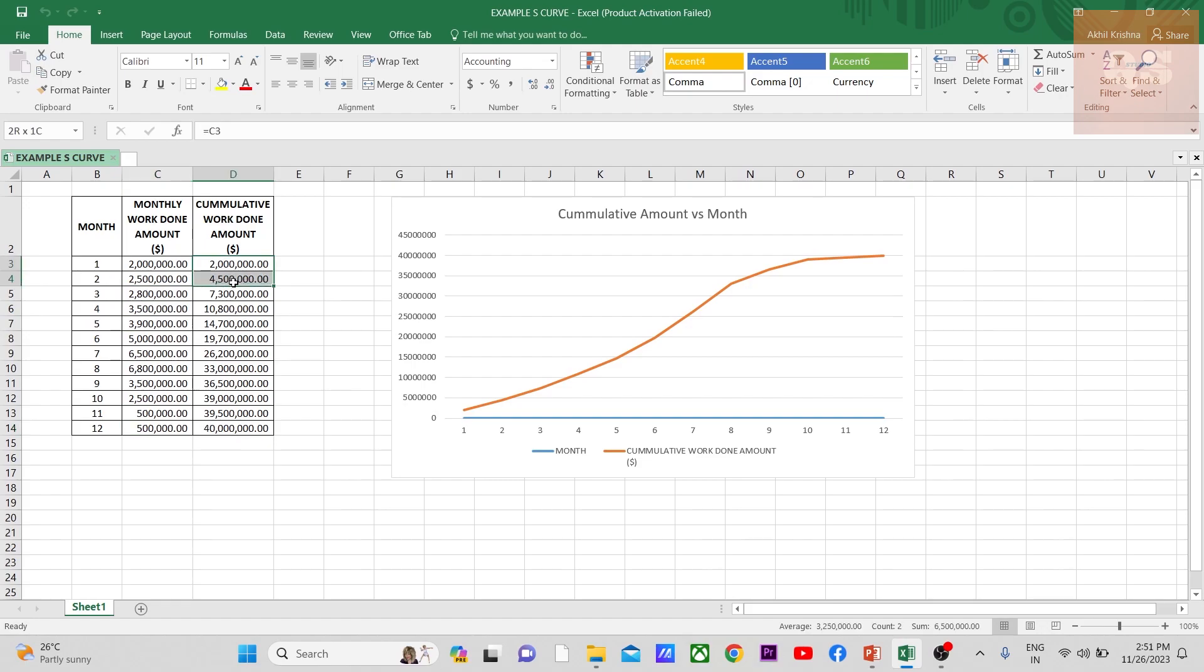Initially it will be 2 million, then second month it will be 2.5, then 2.8, and it goes on till the last month. If you see here, this is the cumulative amount. Cumulative means in the first month it will be 2 million, second month it will be the cumulative of the first and second, so 2 plus 2.5, that is 4.5.